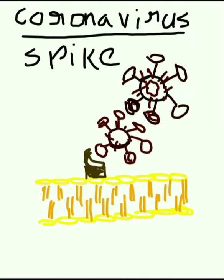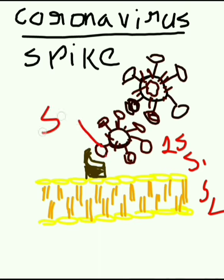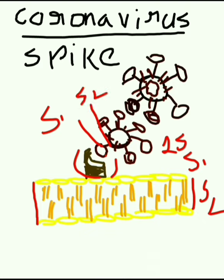In the Part 1 video, we discussed that the spike consists of two subunits: the S1 subunit and the S2 subunit. The S1 subunit binds to the host cell receptor — this is the receptor present on our cell. The S2 subunit mediates the fusion of the viral envelope into the cellular membrane.